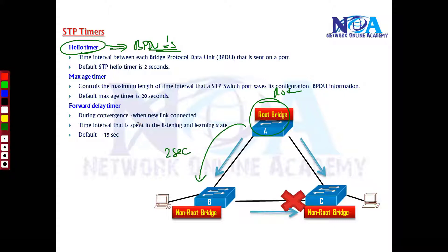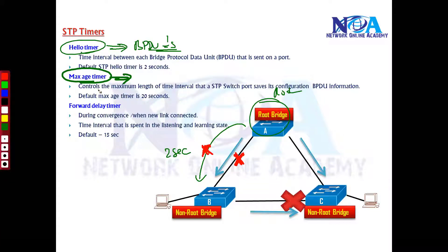The maximum aging time means that in case a link fails for some reason and I'm not receiving the hello message, what is the maximum time I'm going to wait before it starts calculating the alternate path? The maximum aging time is 20 seconds.